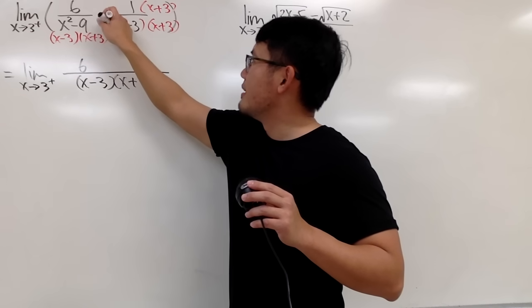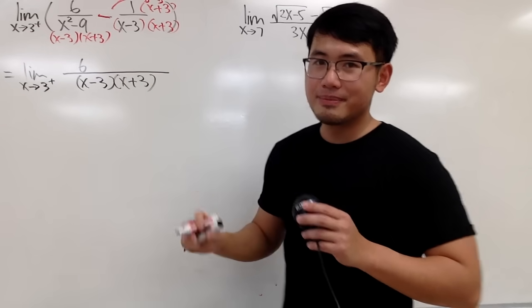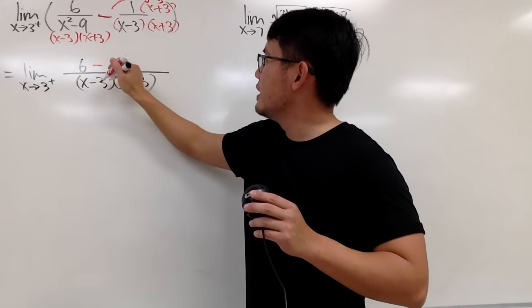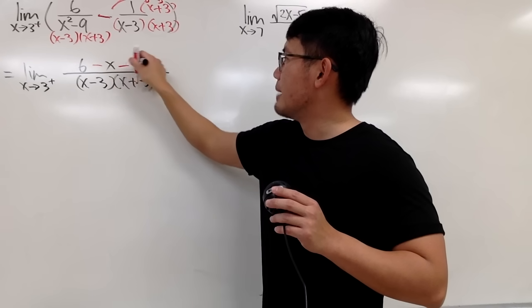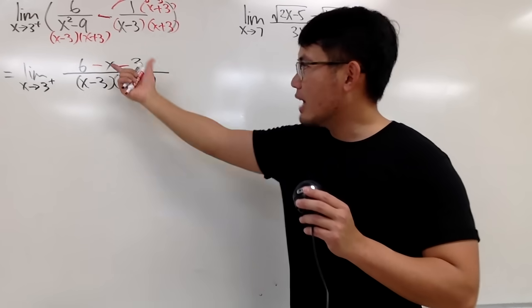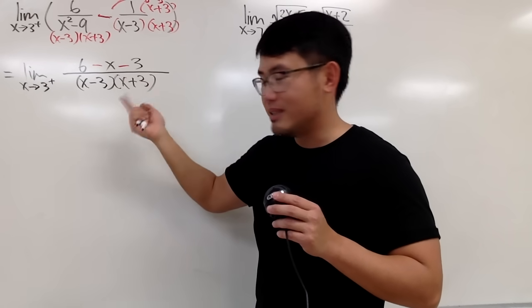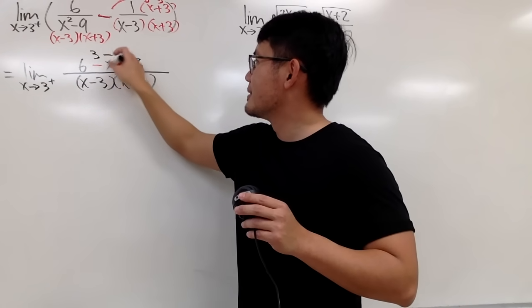Therefore, be sure you look at the minus 1 and distribute it into the parentheses. And when you do that, negative 1 times x is negative x. Negative times the positive 3 is minus 3 right here. And you see, on the top, we can just work out 6 minus 3. So that's positive 3, and then we have the minus x like that.